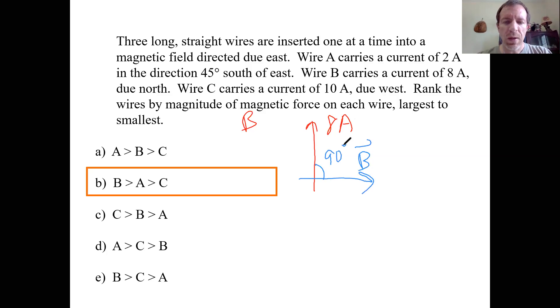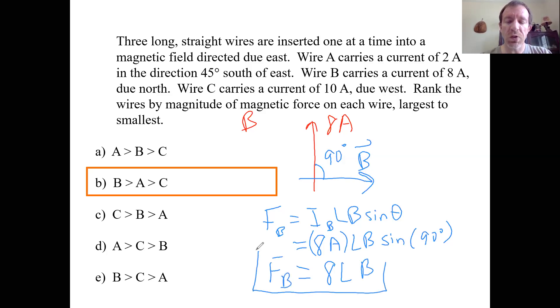It's directed due east. And the angle there is going to be, what, a 90 degree angle because the wire is north. The field is east. So 90 degrees in between the two of them. And now it looks like my force on wire B is going to be, well, the current in B times LB sine theta. This is eight amps LB times L times B times the sine of 90 degrees. Sine of 90 is one. And then if I drop my units, the force on B looks like eight LB. All right. The force on A was 1.4 LB. So B is definitely bigger than A. So we know that B is definitely bigger than A.